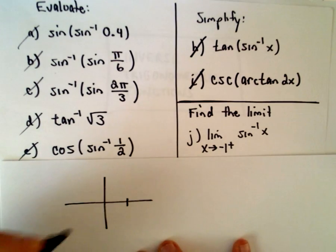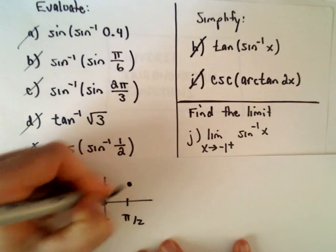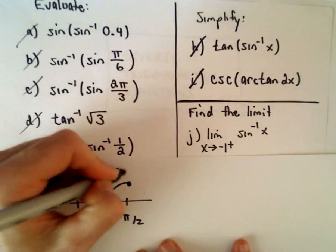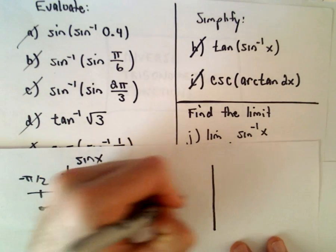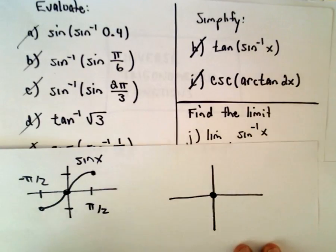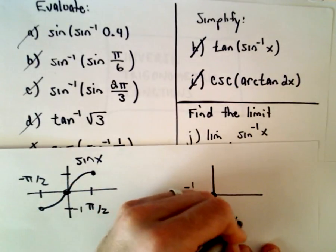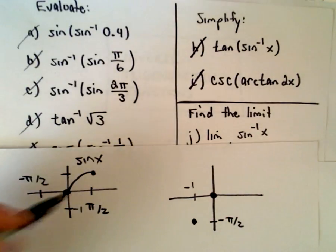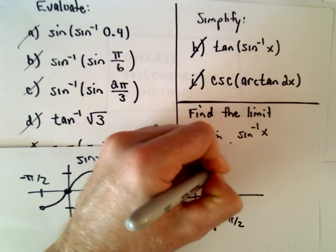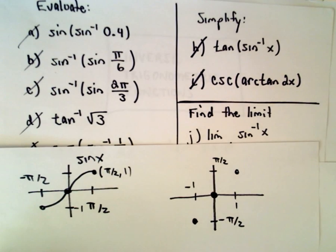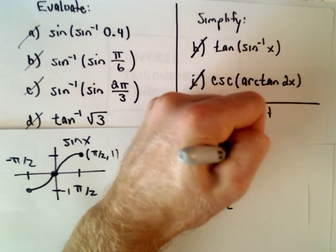I'm going to graph inverse sine x, and to remind myself, I'm actually going to graph sine x first. There's sine x restricted from the interval negative pi over 2 to positive pi over 2. We can just switch x and y coordinates to get the inverse graph. The point pi over 2 comma negative 1 tells me that negative 1 comma negative pi over 2 is on the inverse graph, and 1 comma pi over 2 is on the inverse graph as well. So there's the inverse graph.